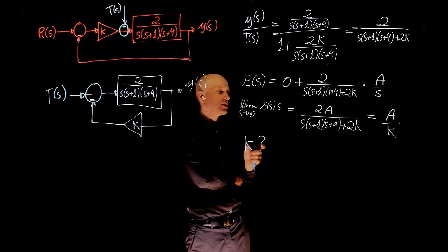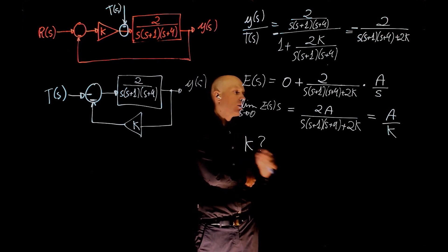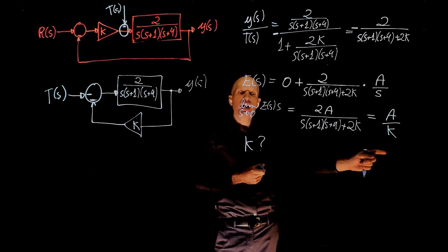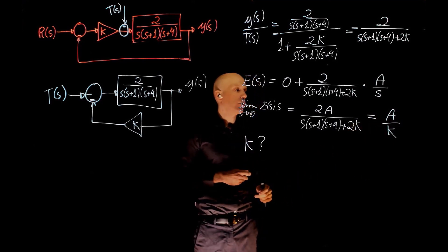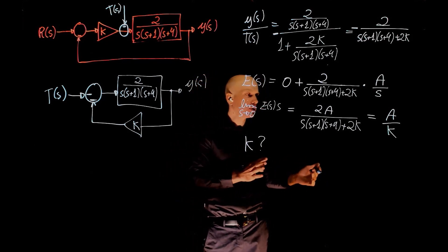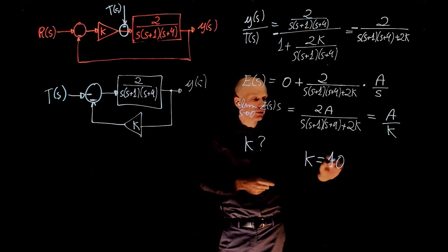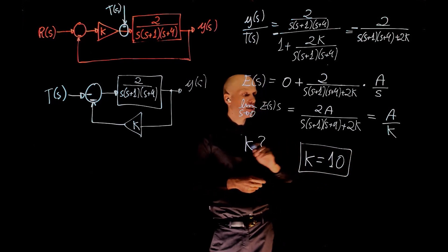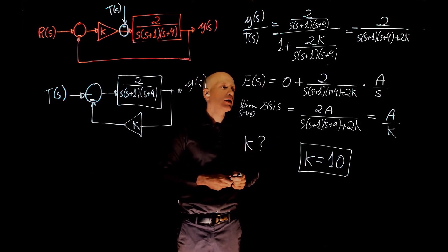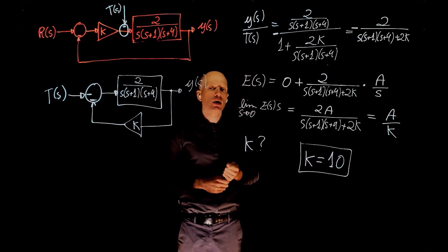Well, we want this term to be minimized. So to do that, we need to increase K. The larger K, the smaller the steady state error. But we know that K can only go from 0 to 10, or from 1 to 10. So we can simply choose K to be the upper bound of that limit, K equals 10. And this will ensure that the effect of the disturbance in the output is minimized, provided the range of stable values of K.